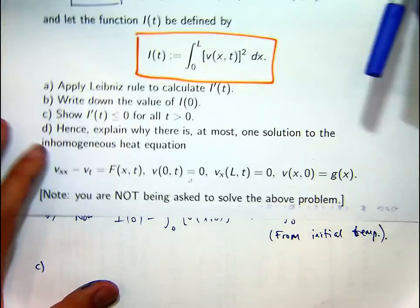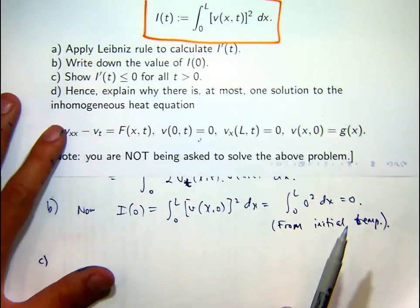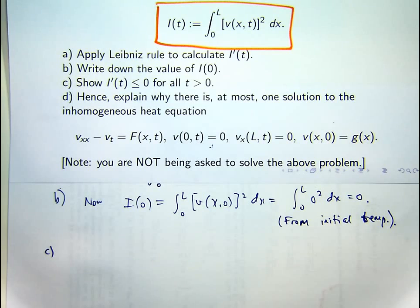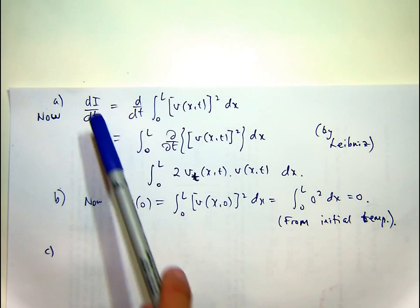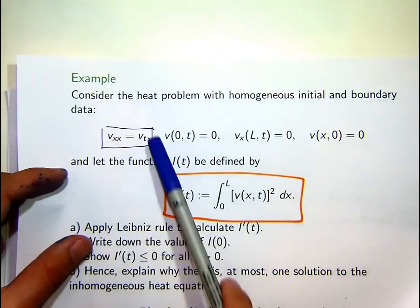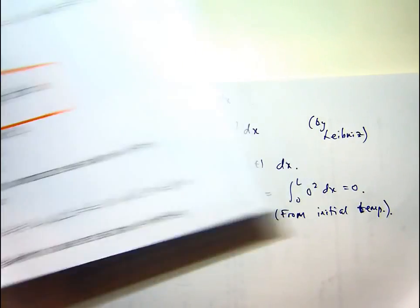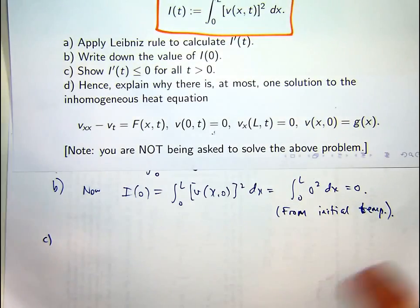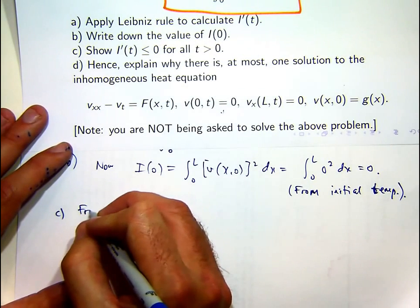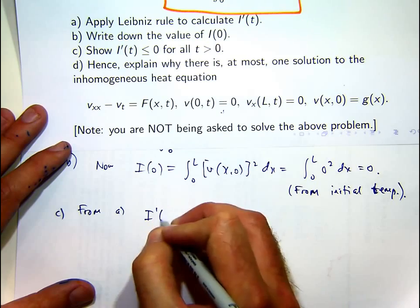Now for part c, part c asks us to show that the derivative of I is less than or equal to zero, is non-positive for all t greater than zero, for all time positive. How do we do that? We've got the derivative of I from part a. What we're going to do is invoke the PDE and then do some integration like I suggested before. It's getting a little bit harder now.